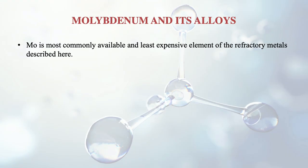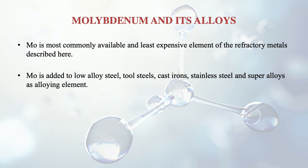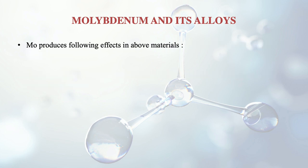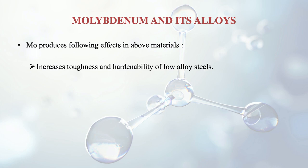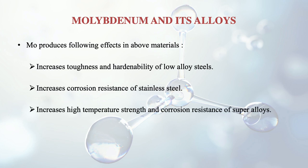Next we discuss molybdenum, which we have also covered in previous sessions. It is the most commonly available and least expensive of the refractory metals discussed here, which is why its use is very common. Molybdenum is added to low alloy steel, tool steels, cast irons, stainless steel and superalloys as an alloying element. Its effects include increasing the toughness and hardenability of low alloy steels, increasing corrosion resistance of stainless steel, and increasing high temperature strength and corrosion resistance of superalloys.